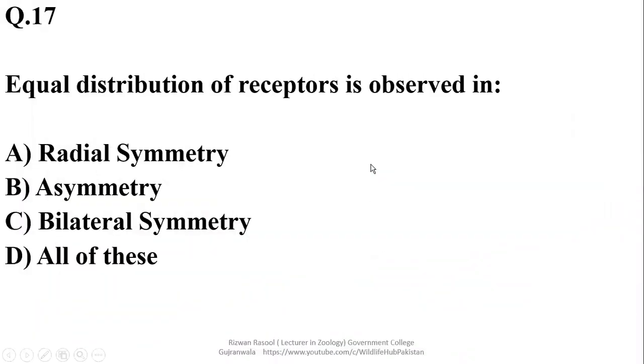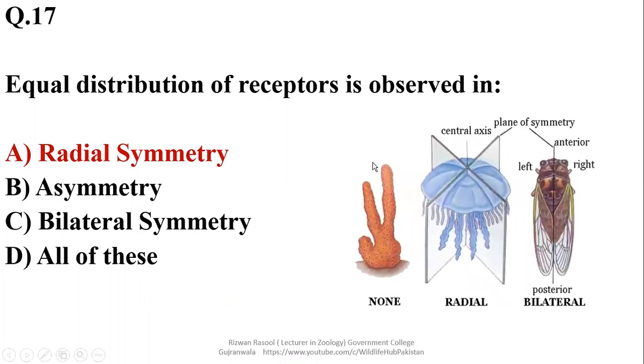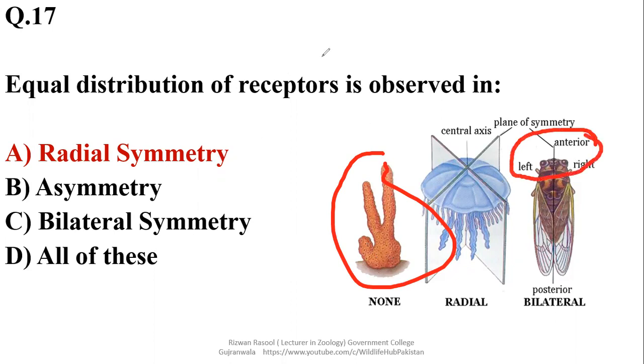Equal distribution of receptors is observed in which type of symmetry? It is radial symmetry in which we can find out equal distribution of receptors on all sides, and it includes mostly sessile organisms or less motile, less active organisms. While asymmetrical organisms they do not have specific distribution of receptors on all sides. But bilateral symmetry shows most of the receptor distributed on the cephalic end and that's also known as cephalization.